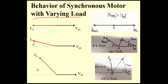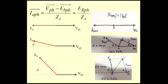Behavior of the synchronous motor with varying load. Initially, no load condition: Ia equals V phase minus Eb phase, divided by Zs. V phase minus Eb phase is nothing but Er phase. First case — no load — V phase minus Eb phase gives a resultant of zero, so Er phase equals zero. In second case, you are increasing the load slightly, delta comes into picture. V phase minus Eb phase gives Er phase, and the Er phase magnitude increases. Here in first case, Er phase equals zero.